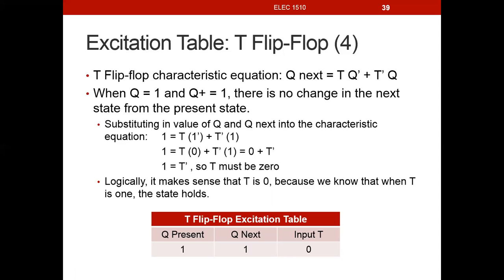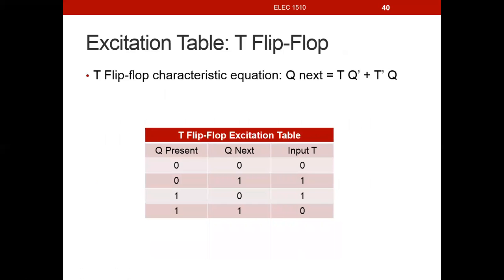In the last entry, when both present state and next state are 1: substituting in gives 0 or T̄, so 1 = T̄, meaning T must be 0 because 0̄ = 1. We're not changing state — when we want to hold state, T must be 0. There's the summary of the T flip-flop excitation table.